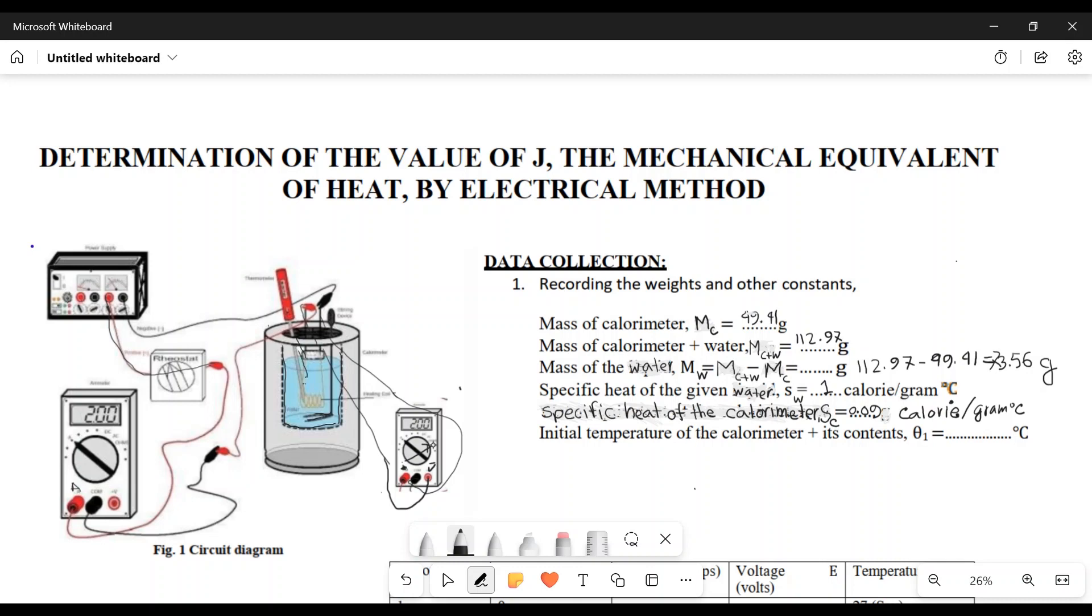The thermometer is in the calorimeter. The initial temperature of the calorimeter is measured. The power supply is connected and current passes through the coil. Heat is produced by the coil and the water in the calorimeter heats up.